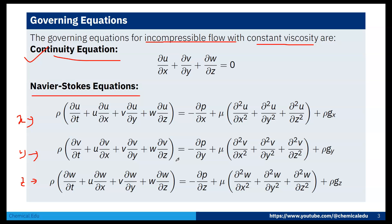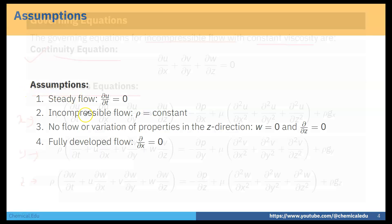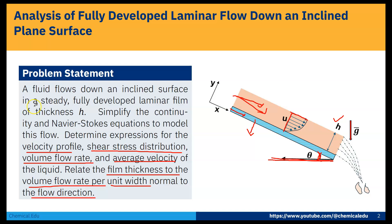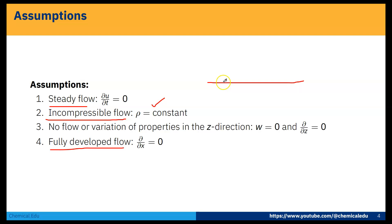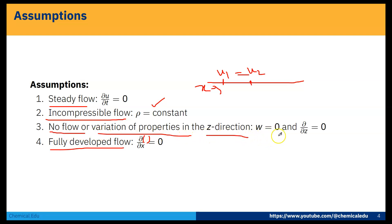Now the assumptions based on the problem: Assumption 1 is steady flow, so ∂u/∂t = 0. Assumption 2 is incompressible flow, so ρ is constant. Assumption 3 is fully developed flow, meaning ∂/∂x = 0 — that is, u1 equals u2 along the flow direction. Assumption 4 is no flow or variation of properties in the z-direction, so w = 0 and ∂/∂z = 0.